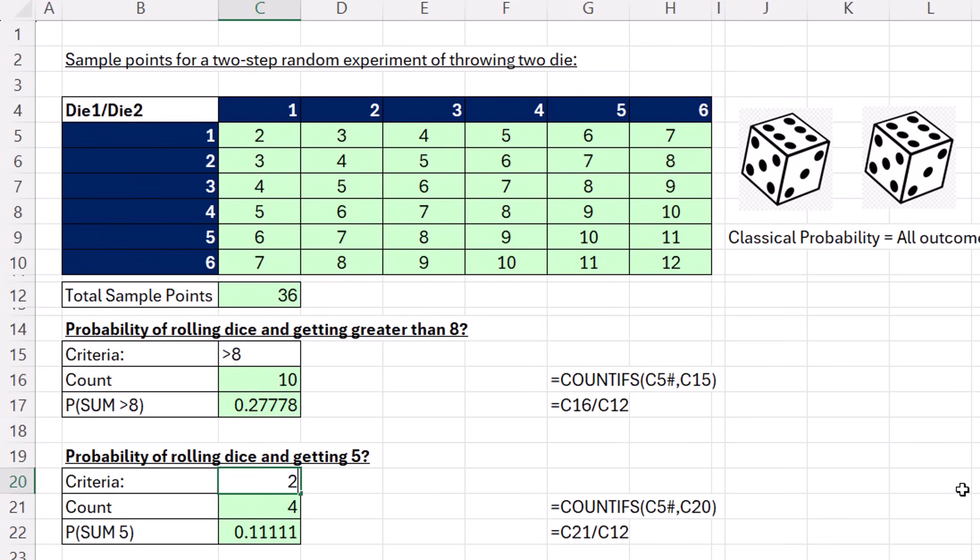If I change this to two, there's only one, so it's one divided by thirty-six. How about zero? There is no possibility of getting zero. It's not in our sample space. Control Z, Z.